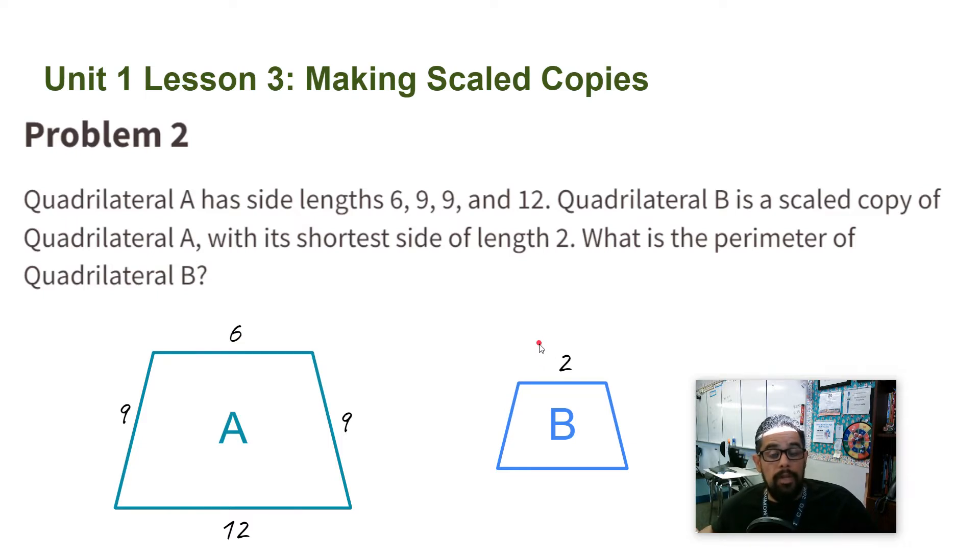Now notice here, our figure got smaller, so I know my scale factor is going to be a smaller number. What is the perimeter of quadrilateral B? The perimeter is going around the shape, adding up all the sides.